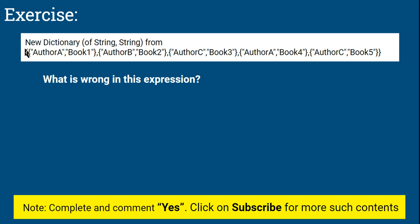The expression I have written is: new Dictionary of string comma string — from author A book one, author B book two, author C book three. You can see author A has written book one, author B book two, author C book three, but author A has also written book four, and author C has written book five and book three. So what is wrong in this dictionary expression?